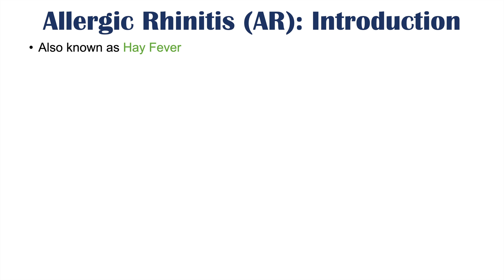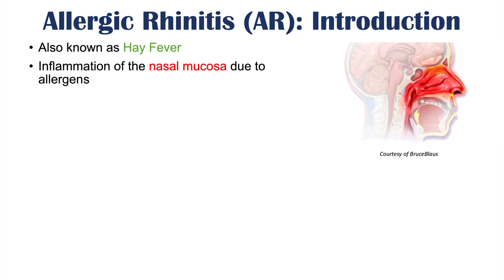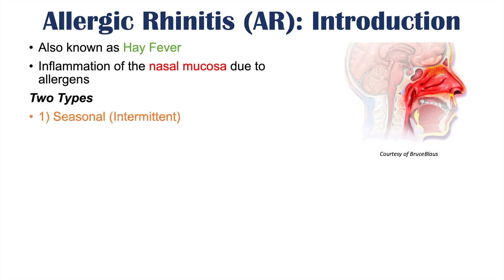Allergic rhinitis is also known as hay fever. It is a condition involving inflammation of the nasal mucosa due to allergens. Your nasal mucosa inside your nasal cavity becomes inflamed when exposed to certain allergens. There are actually two types of allergic rhinitis. One type is known as seasonal or intermittent.